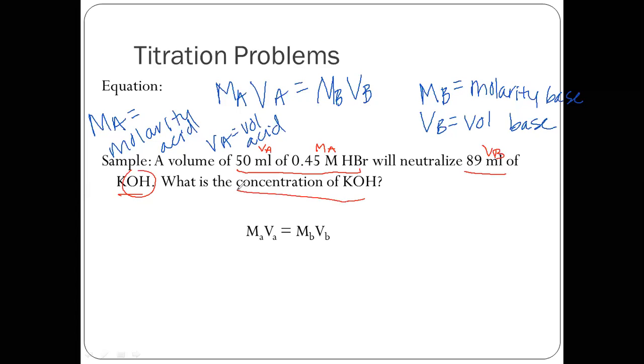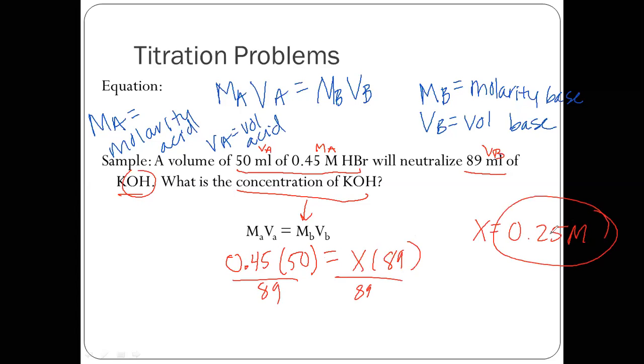And they ask, what is the concentration of KOH? So when they ask for concentration, they're talking about molarity. So here it's just a plug and chug question. So you're going to plug in the molarity of acid 0.45 times the volume of acid 50 equals, we don't know molarity of the base, but we do know the volume. So 0.45 times 50 equals X times 89. You're going to divide both sides by 89. And you get X equals 0.25 molar, capital M.